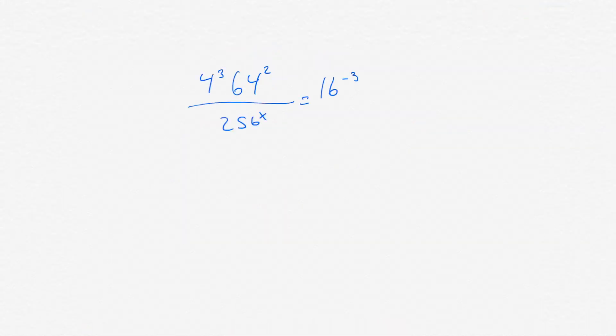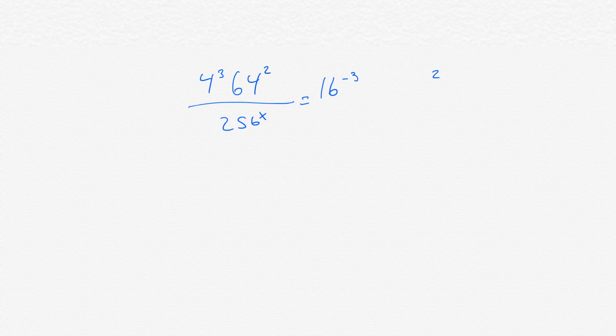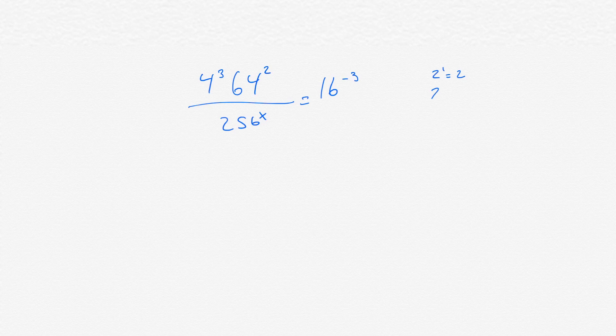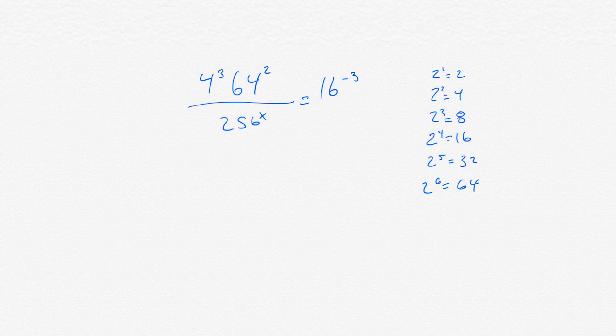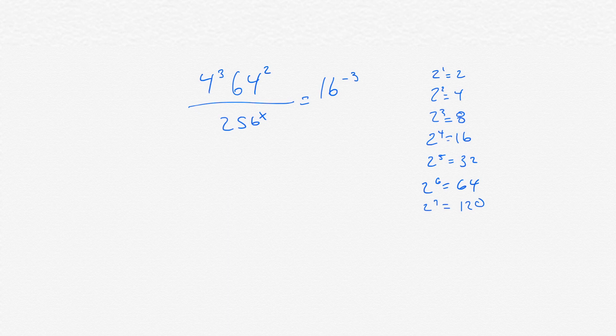The bottom line here, as you can see, we got a 4, 64, 256, 16. These are all powers of 2. So imagine 2 to the first power, obviously 2. 2 squared is 4. 2 cubed is 8. 2 to the fourth power is 16. 2 to the fifth is 32. 2 to the sixth is 64. And then, 2 to the seventh is 128. And 2 to the eighth is 256.